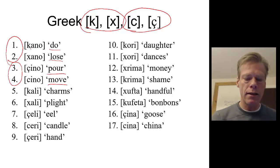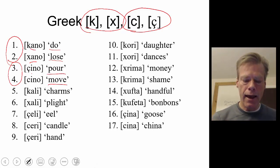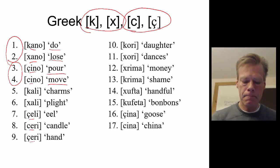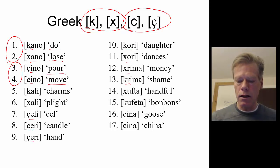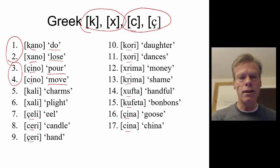The two velars can precede the vowel 'a,' and we see the palatals preceding 'e.' We also see the velars preceding other vowels and preceding consonants as well. Further down, we again see 'e' appearing with the palatals.